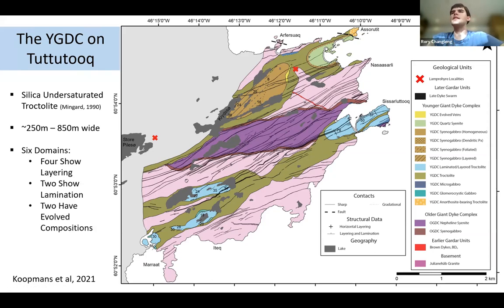And there are six domains in this portion of the dike, which represent layering, areas of layering or lamination of generally plagioclase within the troctolite. And we also have in the north evolved compositions where we see syenogabbro and syenite coming in. So this is the Assortutit domain here, which is what we're looking at in more detail.